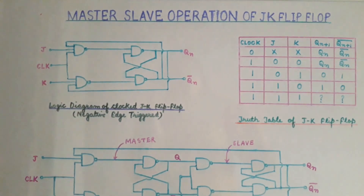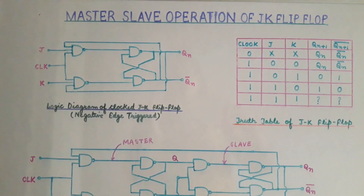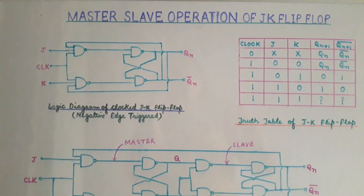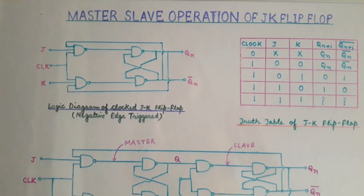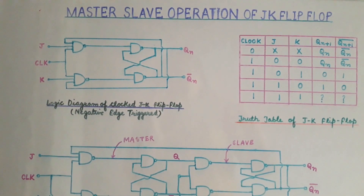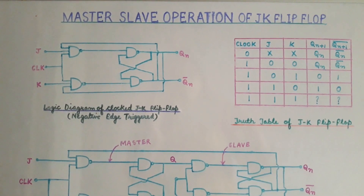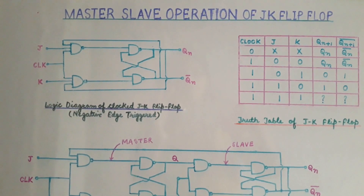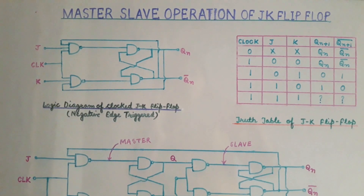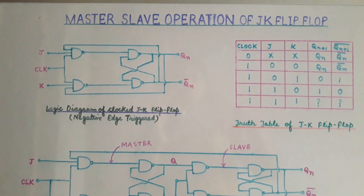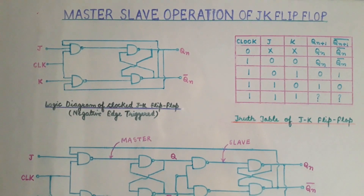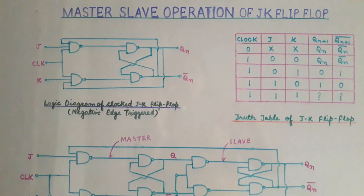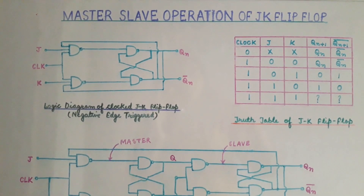In this presentation we will discuss the operation of master-slave JK flip-flop. In the previous class we discussed the operation of JK flip-flop. We use JK flip-flop because there are some disadvantages in D flip-flop and SR flip-flop. In SR flip-flop, when the value of input S is equal to 1 and R is equal to 1, the output is unpredictable.